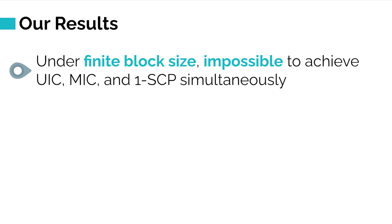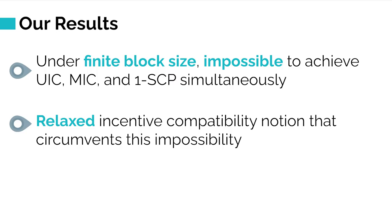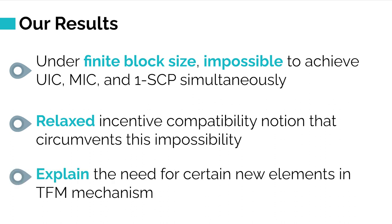Let me first tell you our results. First, we prove an impossibility result: if you have finite block size, you cannot achieve all three properties. This seems pessimistic, so we ask if this is the end of the world — and we introduce a relaxed notion that can allow us to circumvent this impossibility. Third, because blockchain mechanism design is very new with new elements like the burn rule, we also mathematically answer whether these new elements introduce more expressive power.